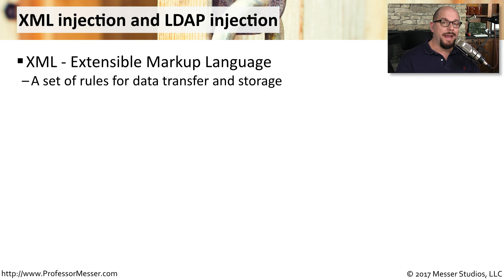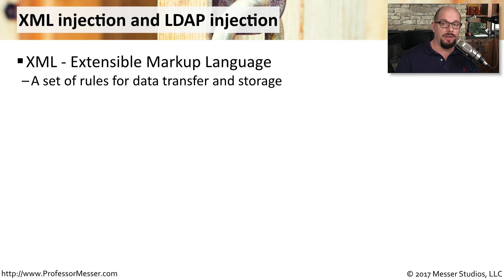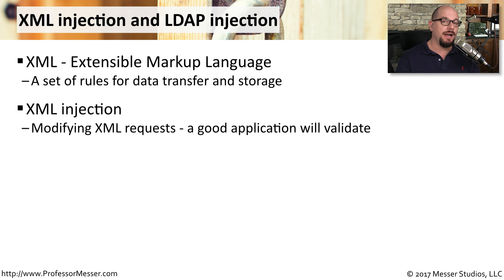It's this trust that the application and database have with each other that allows me to take advantage of this, and you can see now why SQL injections can be a significant vulnerability. SQL is just one way to get data into an application — there are many other ways as well. One type of injection is an XML injection. It stands for Extensible Markup Language, a very standard way to take data and put it into and out of an application.